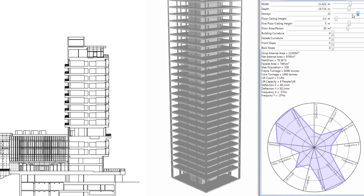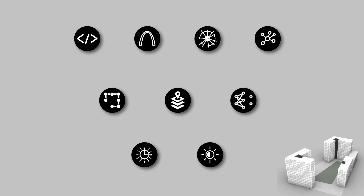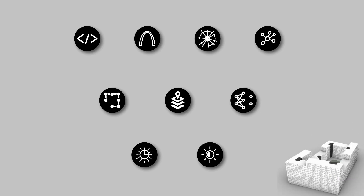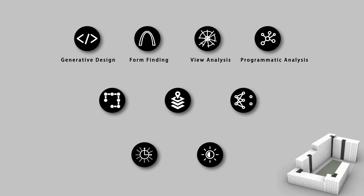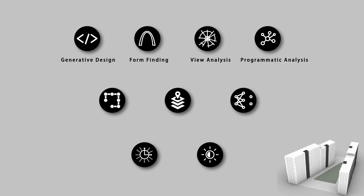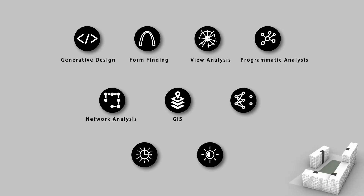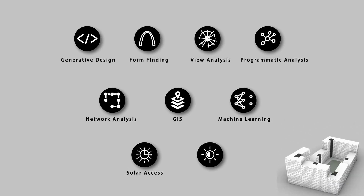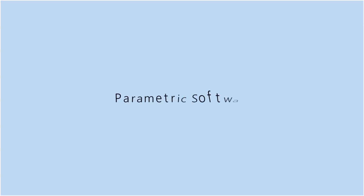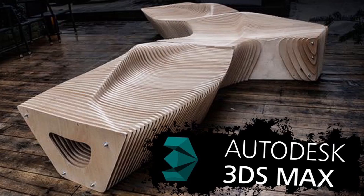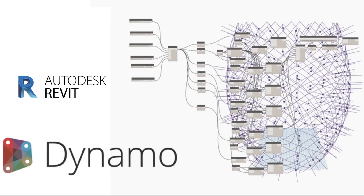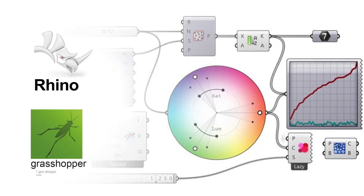Architects use the parametric process for different aspects like generative design, form finding, view analysis, programmatic analysis, network analysis, GIS, machine learning, solar axis, and daylighting. The main software used for parametric design includes Autodesk 3DS Max, Autodesk Revit with Dynamo, and Rhino with Grasshopper. In total, this is parametric design.